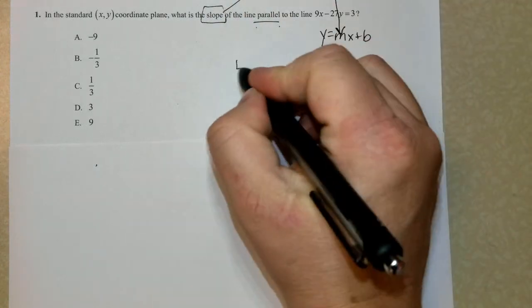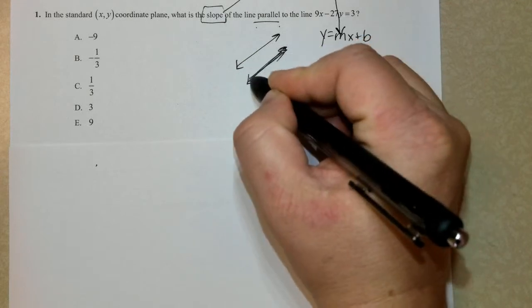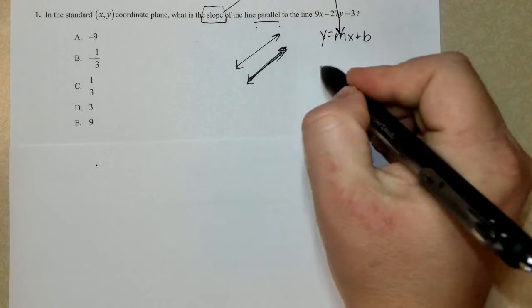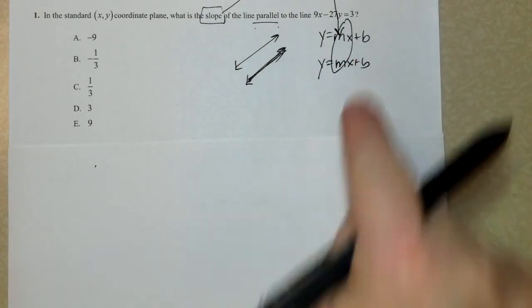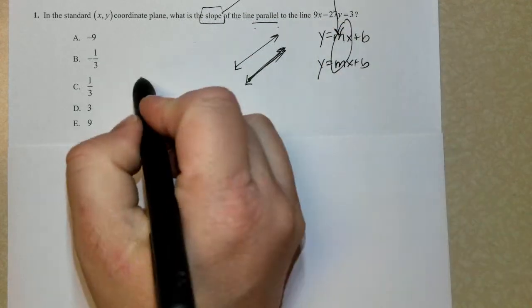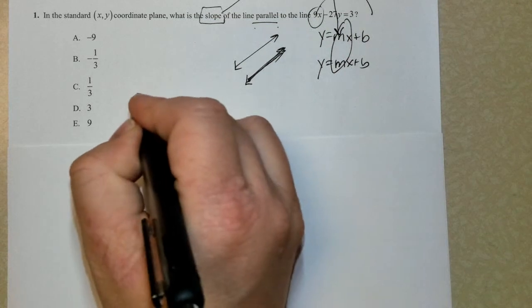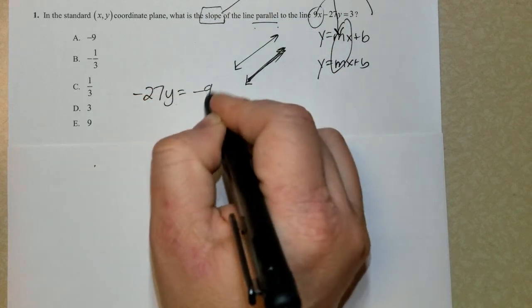So all I'm really concerned about is the slope. If two lines are parallel, visually we know they run side by side and will never intersect. If you just look at equations, if two lines are parallel, they'll have the same slope. So how can I figure this out? I'm going to take what I'm given and move the 9 to the opposite side. So I have negative 27y equals negative 9x plus 3.